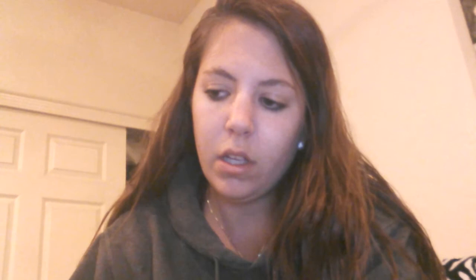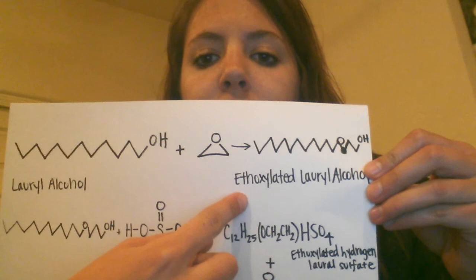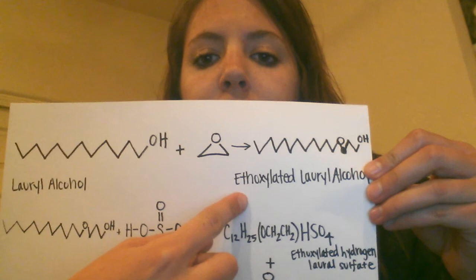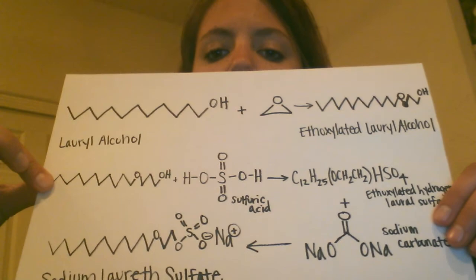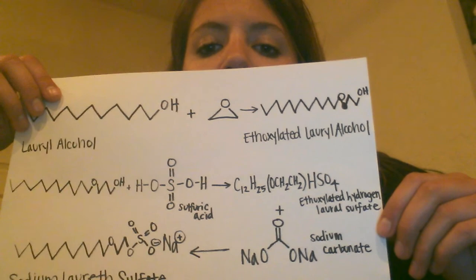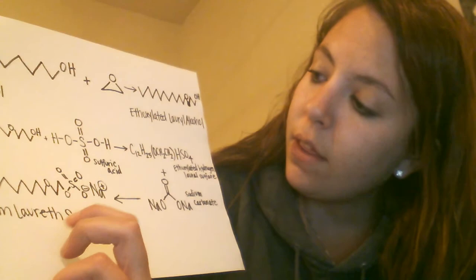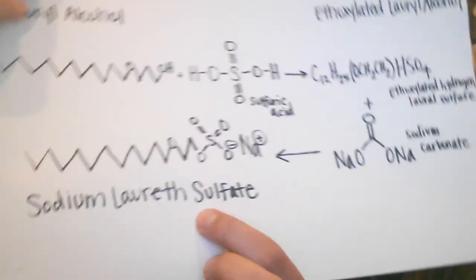Sodium lauryl ether sulfate is synthesized by first taking lauryl alcohol and ethoxylating it to make ethoxylated lauryl alcohol — that's the ethoxylate group. You then take ethoxylated lauryl alcohol, add sulfuric acid (H2SO4), and you end up with hydrogen lauryl sulfate. Then you add sodium carbonate, and finally you end up with sodium lauryl sulfate.